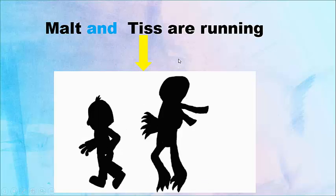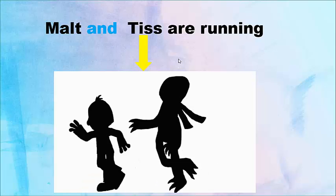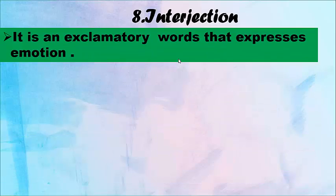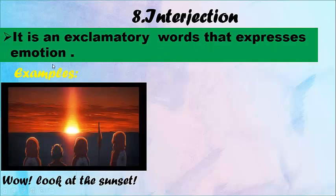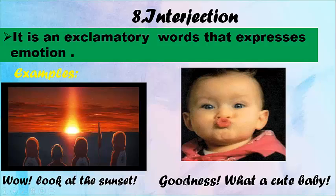Interjection: an exclamatory word that expresses emotion. Examples: 'Wow, look at the sunset!' 'Goodness, what a cute baby!' Exclamatory means it's an expression of emotion.